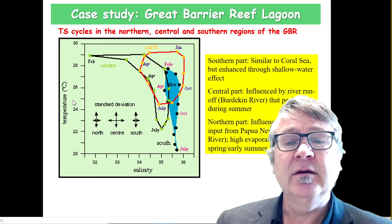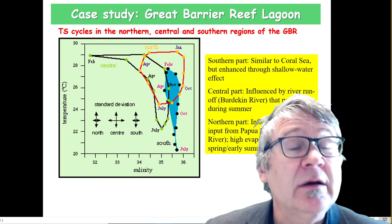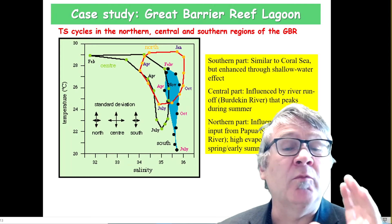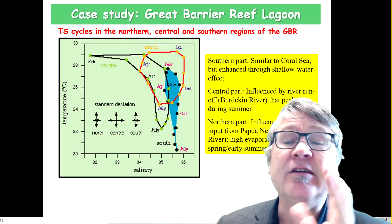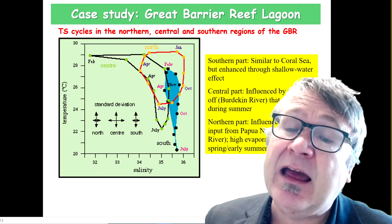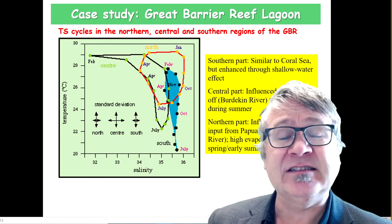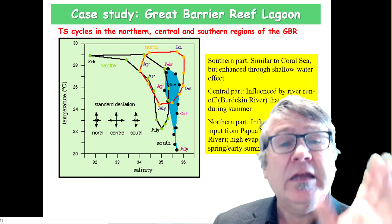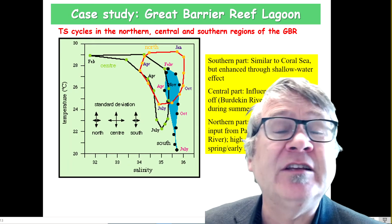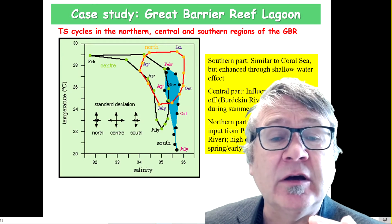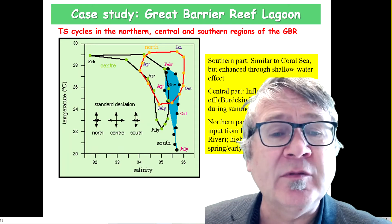We are looking at the temperature variations that we were mostly concerned with, not salinity variations. Here are the temperature-salinity-time diagrams for the three different regions: north, center, and south. What really only matters for this exercise on coral bleaching is the warmest temperature.